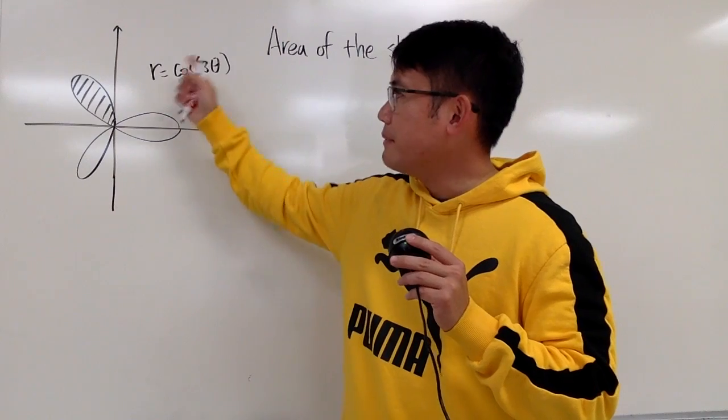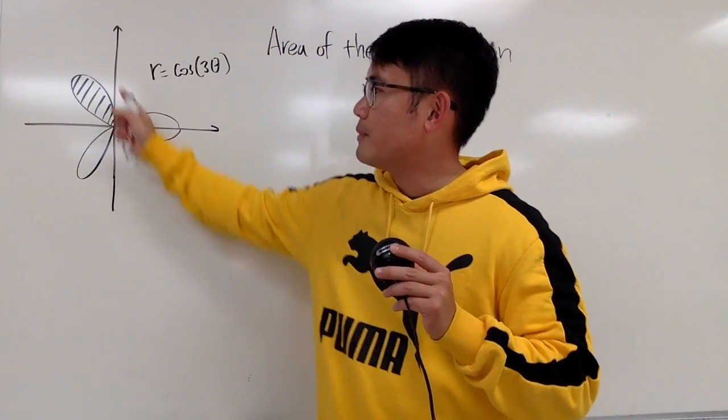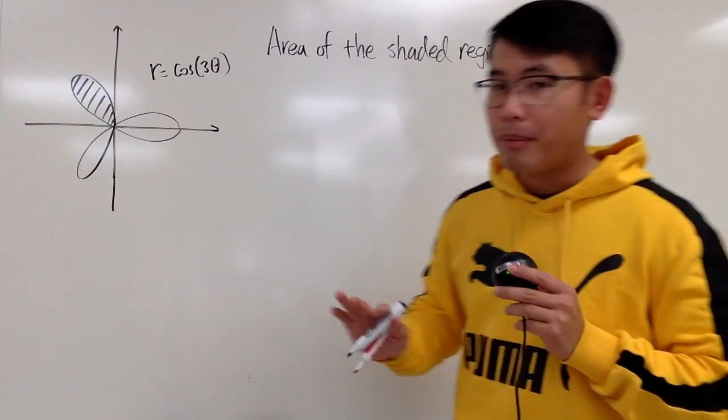If you go from 0 to 2 pi, then that means you actually run the graph twice, which is double counting, that's not good.